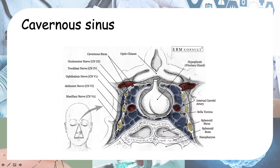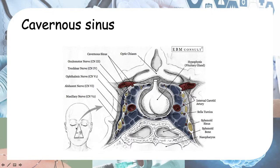Next, considering the nerves: cranial nerves 3, 4, and 6 are responsible for extraocular movements, so movement of the eyeballs will be affected, known as ophthalmoplegia. Cranial nerve 3 has two additional functions beyond extraocular movements. It innervates the superior palpebral muscles,